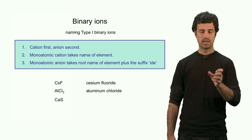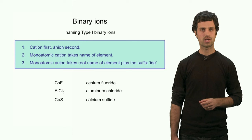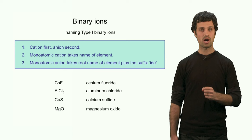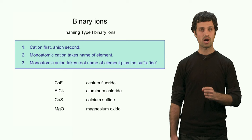This compound is composed of calcium and sulfur. We name calcium first and sulfur second. Sulfur with the suffix '-ide', so it becomes calcium sulfide. Magnesium oxide is called magnesium oxide because the oxygen anion acquires the suffix '-ide'.